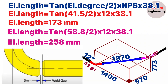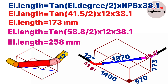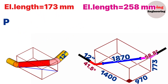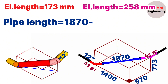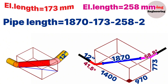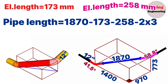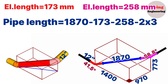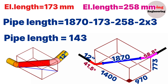During fit-up, there should be a gap of about 3 millimeters between the pipe and elbows to be welded, and we must account for these gaps in our calculation. The red pipe section length equals the center-to-center distance of 1870mm, minus the red elbow length of 173mm, minus the pink elbow length of 258mm, minus 2 times 3mm gaps for welding. The result is 1433 millimeters.